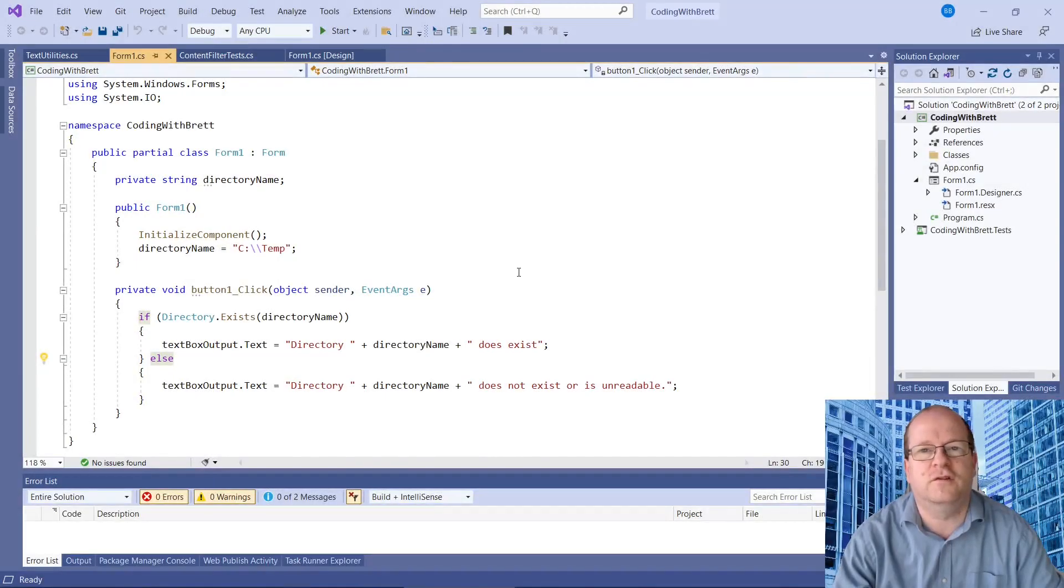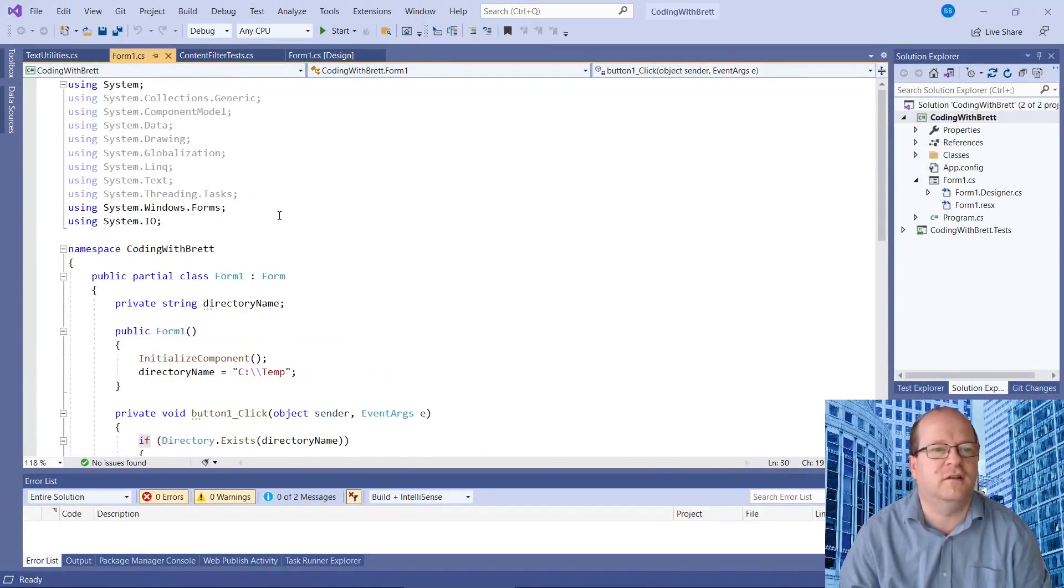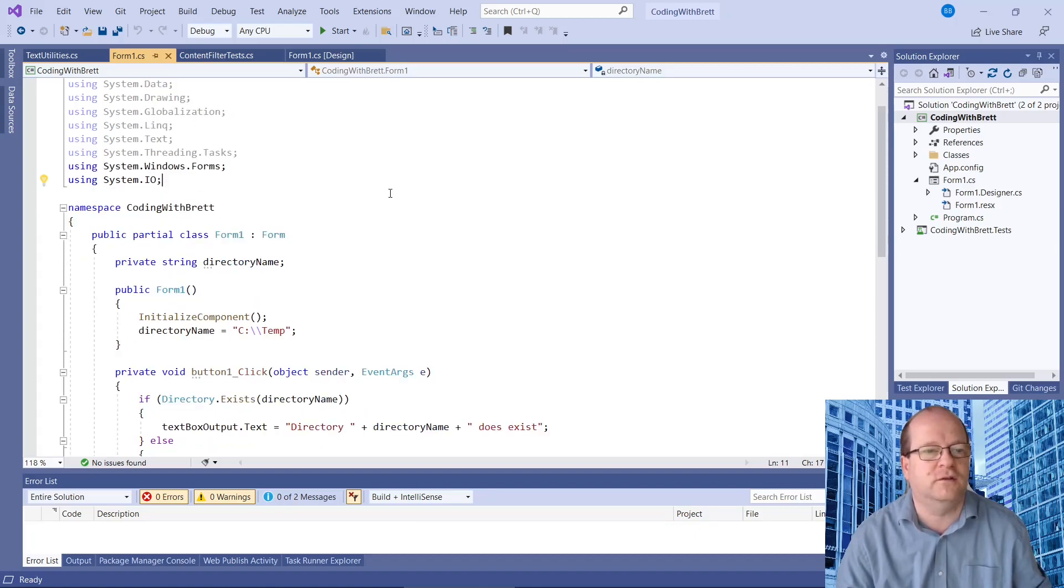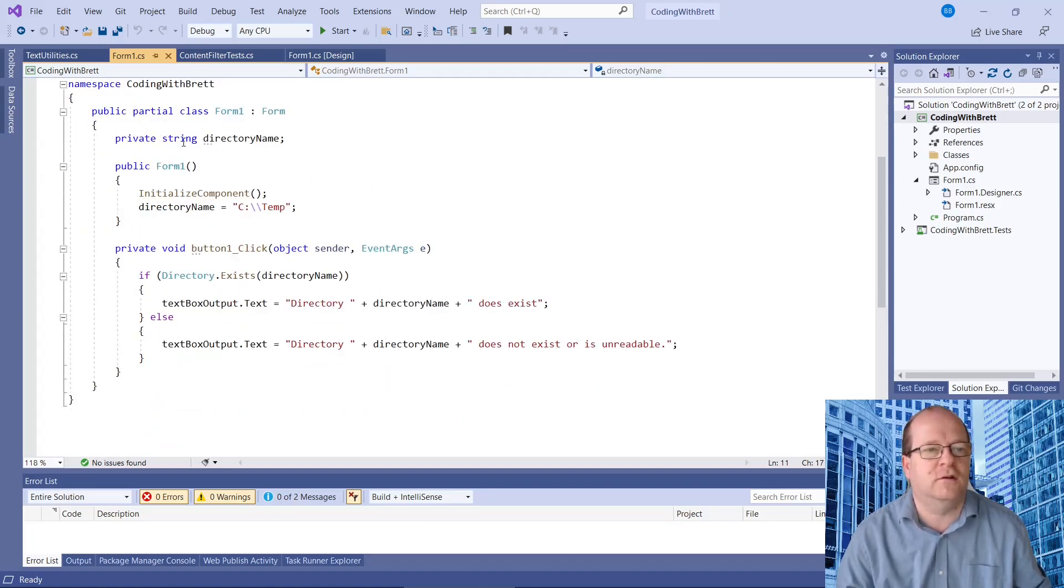In Visual Studio here is how you would use this. So as I said this is actually a Windows form project. So make sure you include System.IO in whatever class you are using it in. So here I have made a directory name private string, and when the form is initialized it will be set to C:\temp here. So if the directory exists then it will say it does exist.